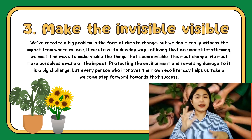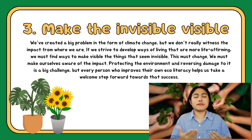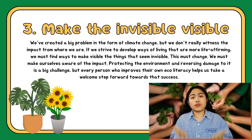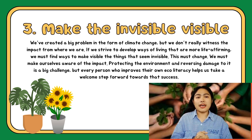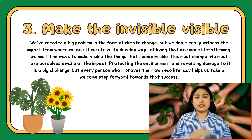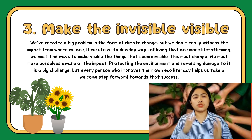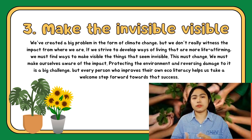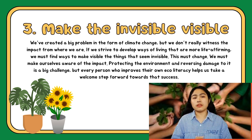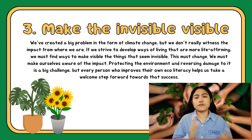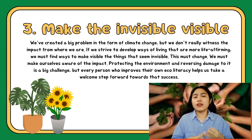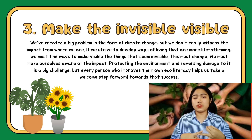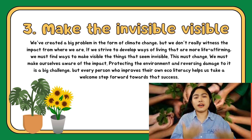Third, make the invisible visible. Historically, and for some cultures still in existence today, the path between a decision and its consequences was short and visible. If a homesteading family cleared their land of trees, for example, they might soon experience flooding, soil erosion, a lack of shade, and a huge decrease in biodiversity.